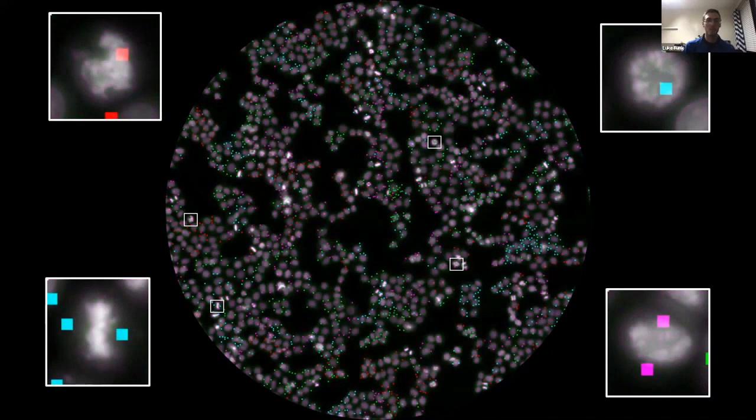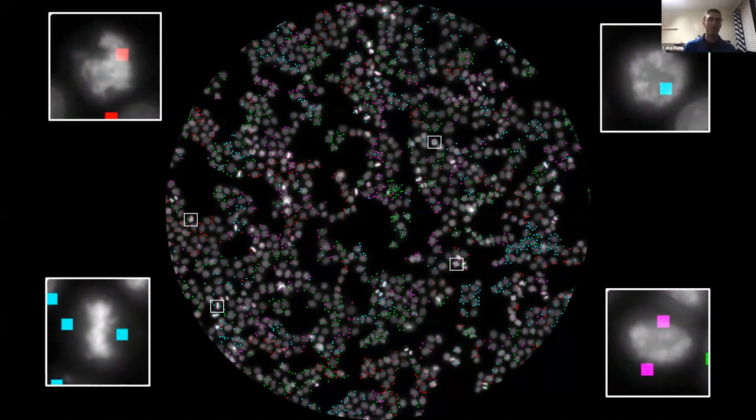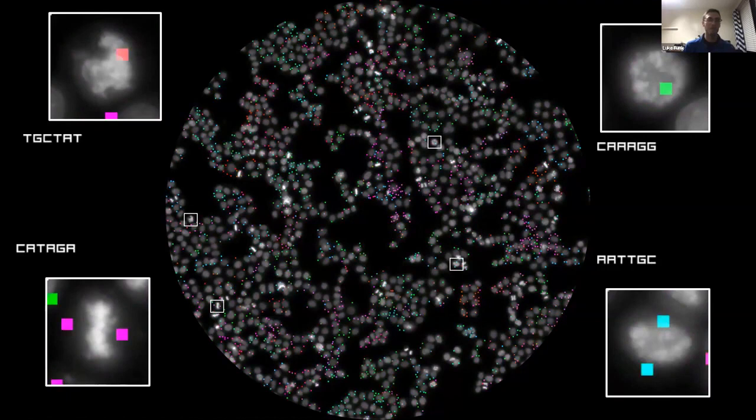This is where the in-situ sequencing data comes in. In this image, each of these individual colored dots represents one read of the in-situ sequencing data. The color of the dot tells us which DNA base was in that position for the DNA barcode. If we iterate through multiple cycles of sequencing, we can build up a short DNA barcode sequence that can then tell us, based on our experiment design, what gene was perturbed in each of these individual cells.